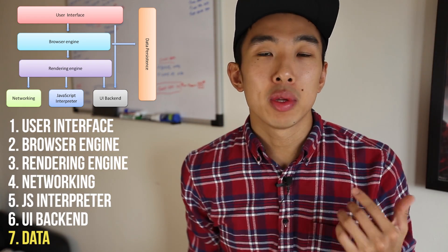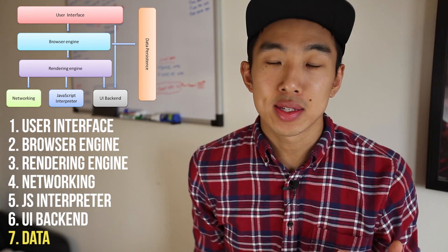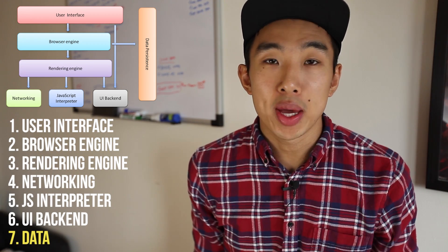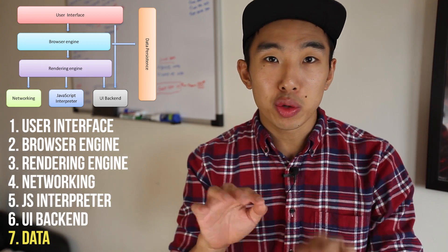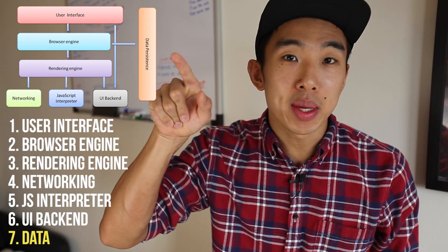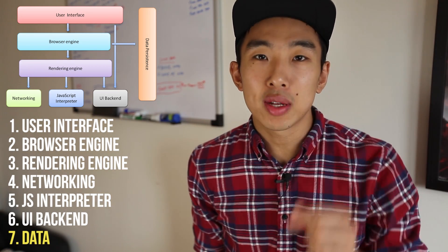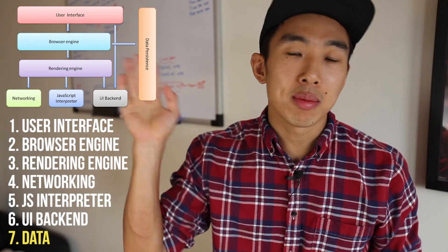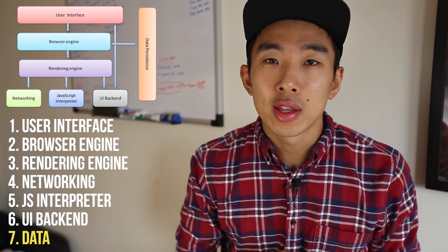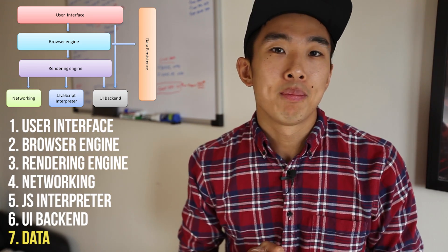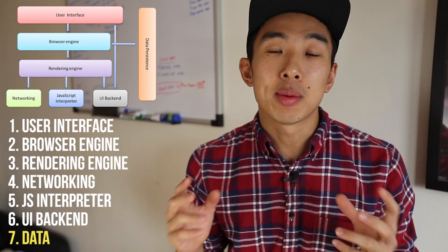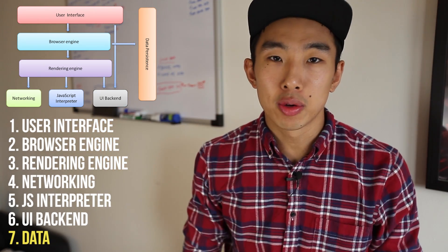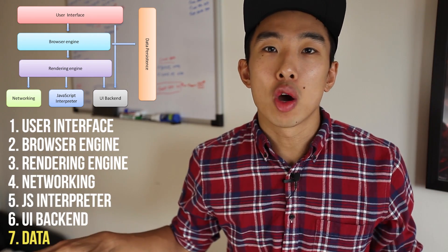Seventh and last is the data persistence layer. Browsers save a lot of information — every time you go to a website, log in, and click 'remember me,' that's actually saving a little bit of data on your browser. These are called cookies. The browser also saves random data like your search history, but there's always a set of data the browser keeps itself, and that's the persistence layer. That completes the basic overview.